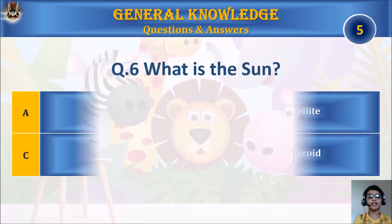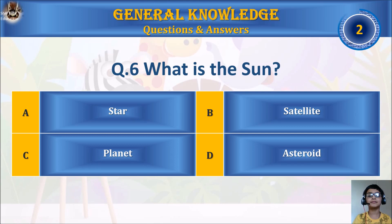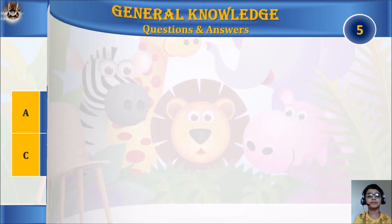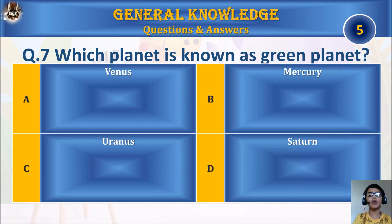Question 6: What is the Sun? A. Star, B. Satellite, C. Planet, or D. Asteroid? Your time starts. The answer is A. Star.